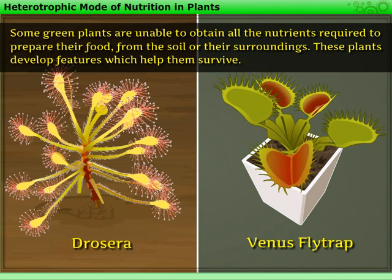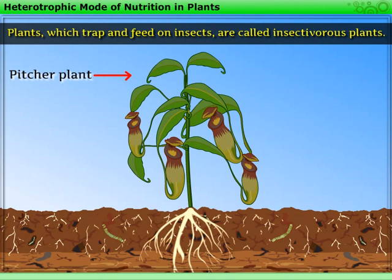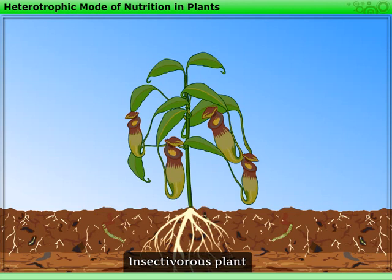Some green plants like Drosera, Venus flytrap, etc. are unable to obtain all the nutrients required to prepare their food from the soil or their surroundings. In such cases, these plants develop features which help them survive — they can trap insects and digest them. Plants which trap and feed on insects are called insectivorous plants. For example, the pitcher plant.